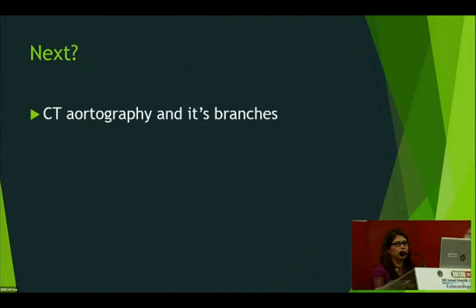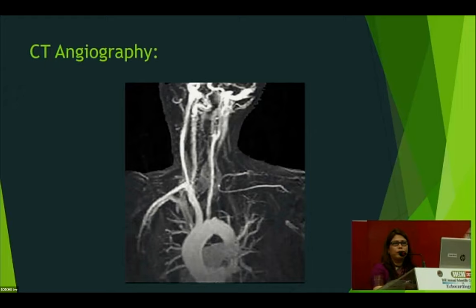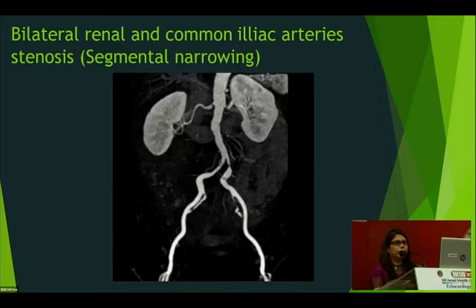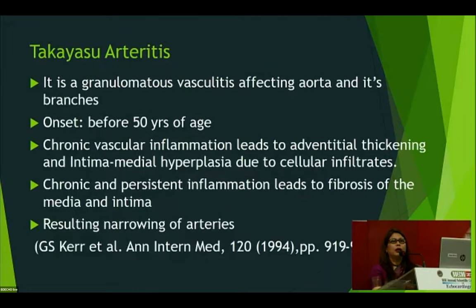CT aortography was performed to confirm the case and assess its branches. Imaging shows absent left subclavian artery; the right subclavian artery is present but absent when it becomes the axillary artery; there is significant narrowing in both common carotid arteries; bilateral renal and common iliac artery stenosis is also present — segmental narrowing, which can occur in Takayasu arteritis.